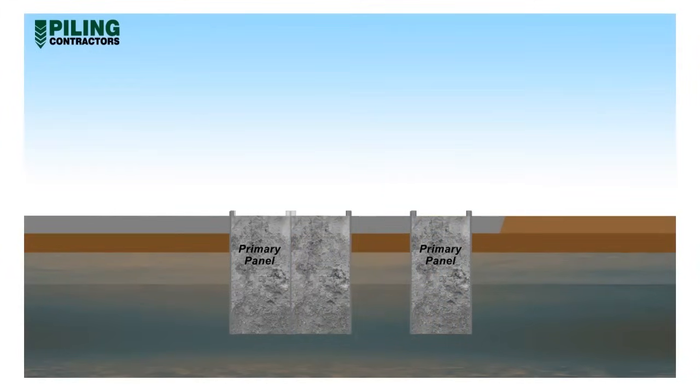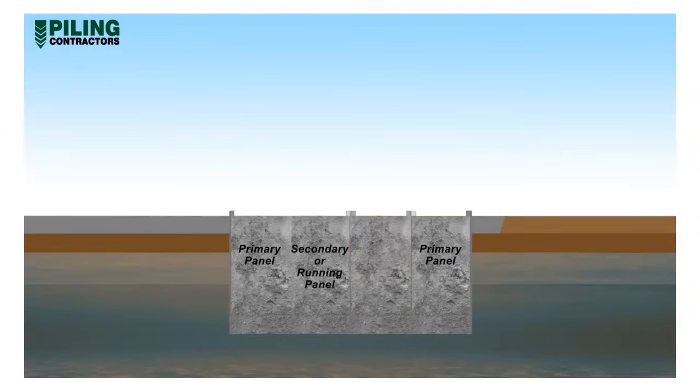Subsequent panels excavated adjacent to a completed panel are called secondary or running panels. The final panel concreted in a run-of-wall is termed the closing panel, as this panel closes up the length of wall. The stop end is removed from one panel during excavation of the adjacent panel.